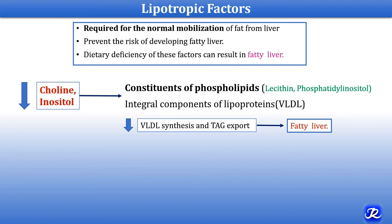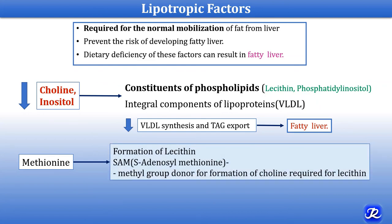How is methionine important? Methionine is required for the formation of lecithin (phosphatidylcholine). The active form of methionine, S-adenosylmethionine (SAM), acts as a methyl group donor for the formation of choline, which is required for lecithin — and that is how methionine is also a lipotropic factor.